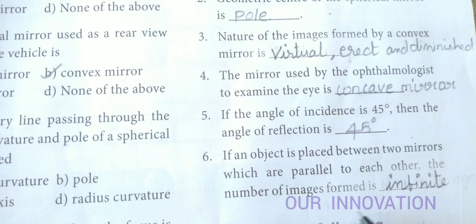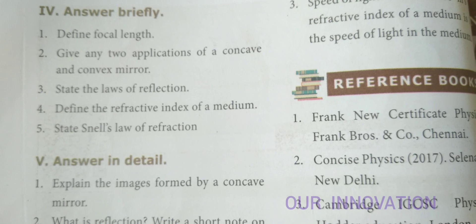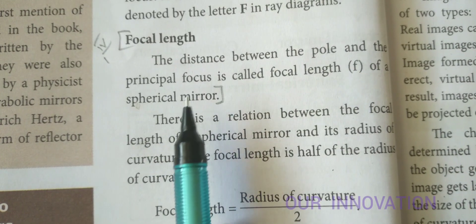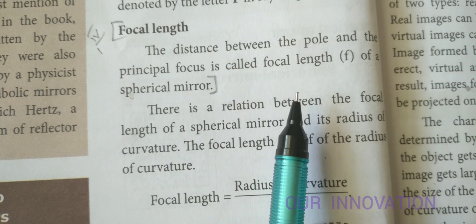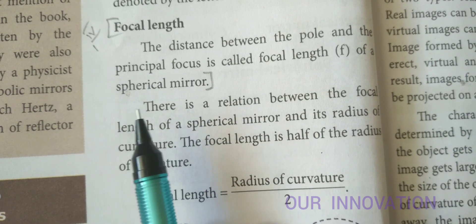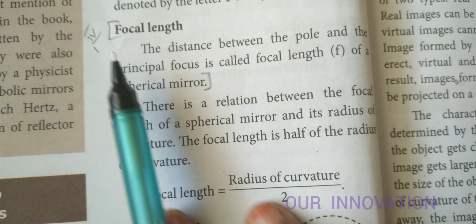For answer briefly, define focal length. Page number 24. Focal length: The distance between the pole and the principal focus is called focal length, that is F of spherical mirror. Mark it from here.